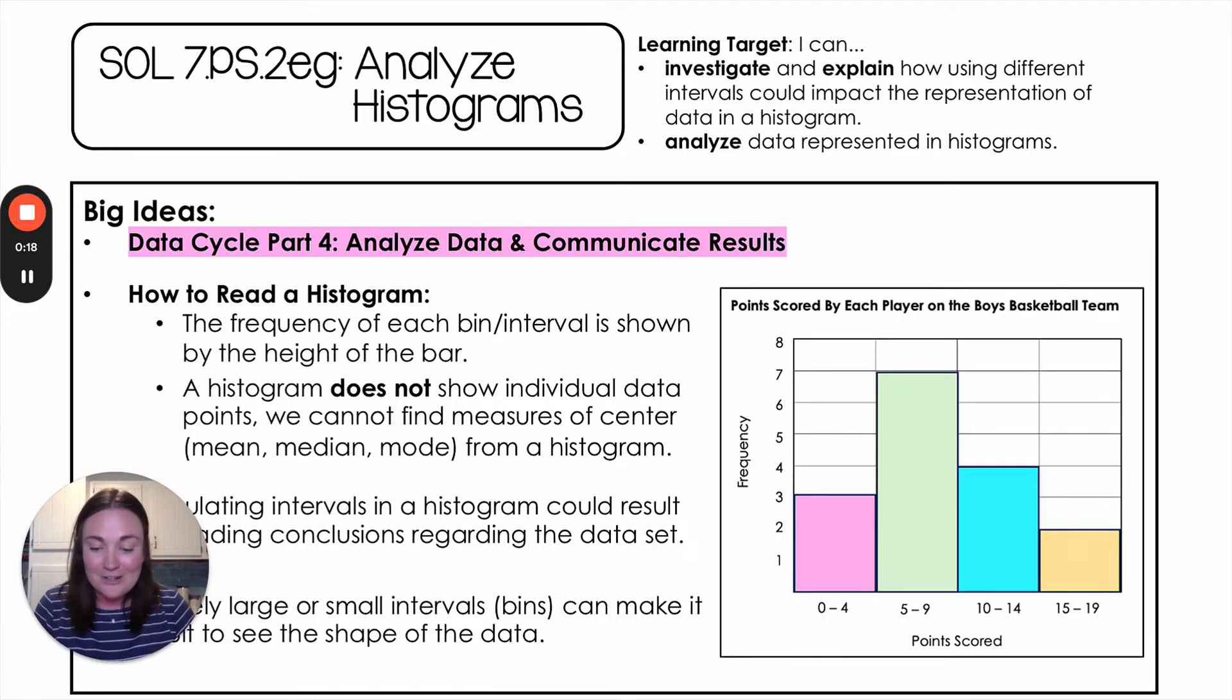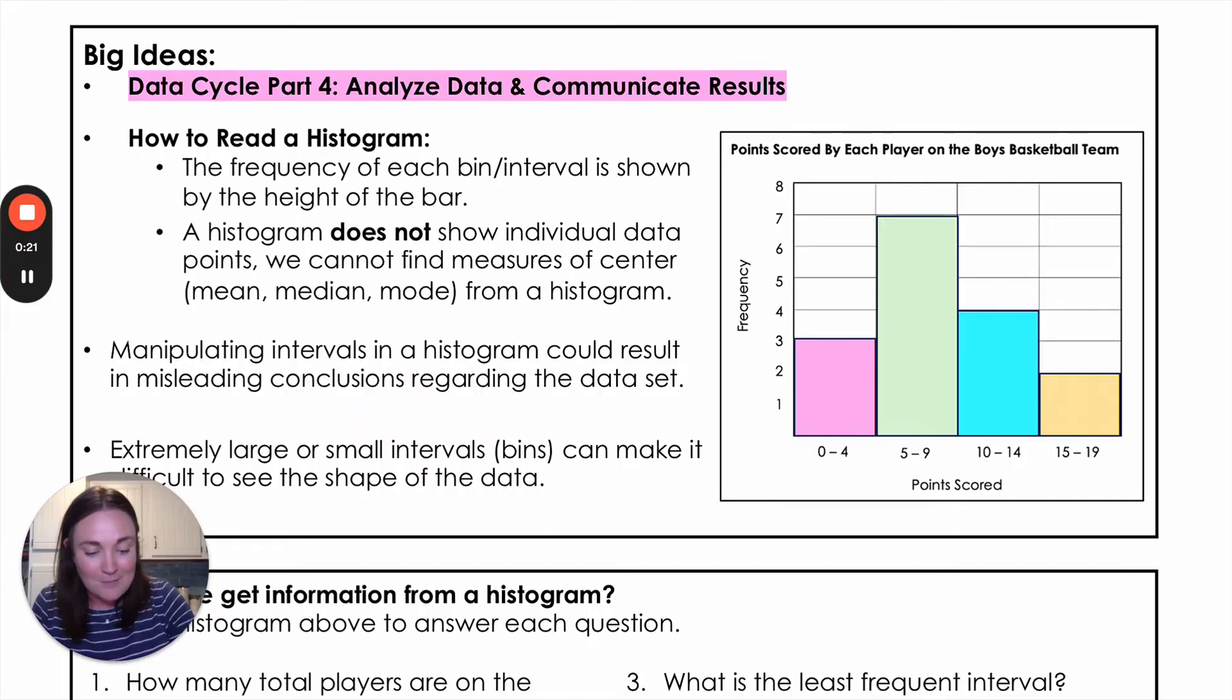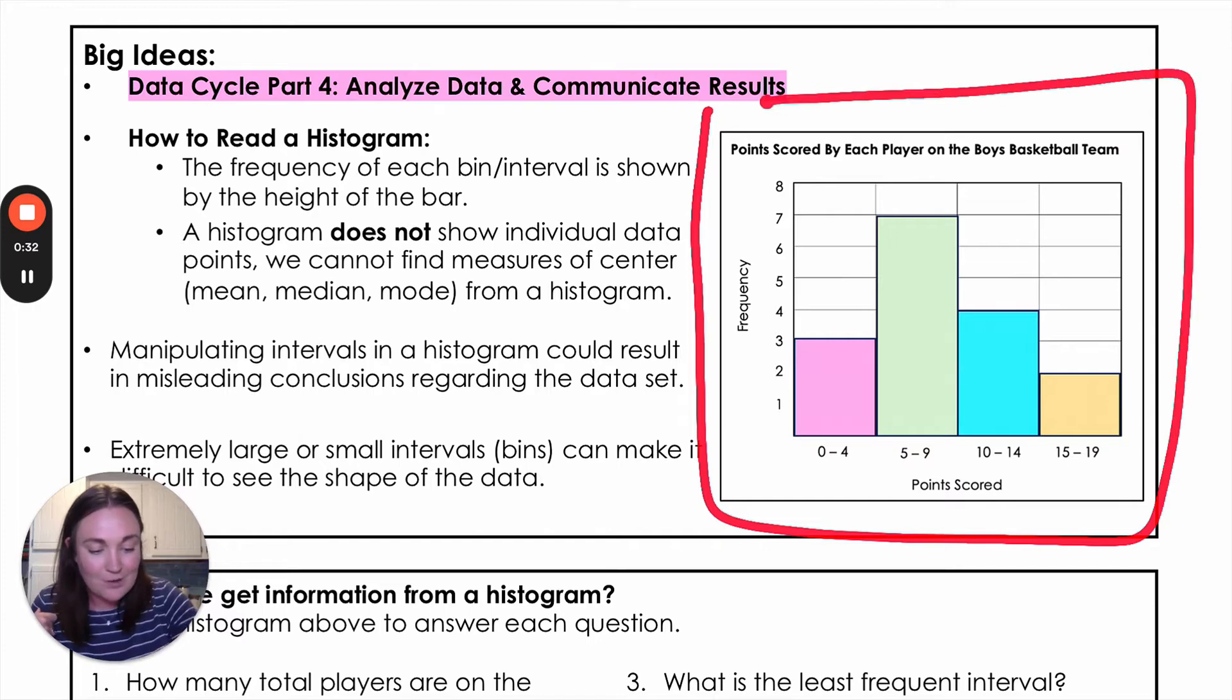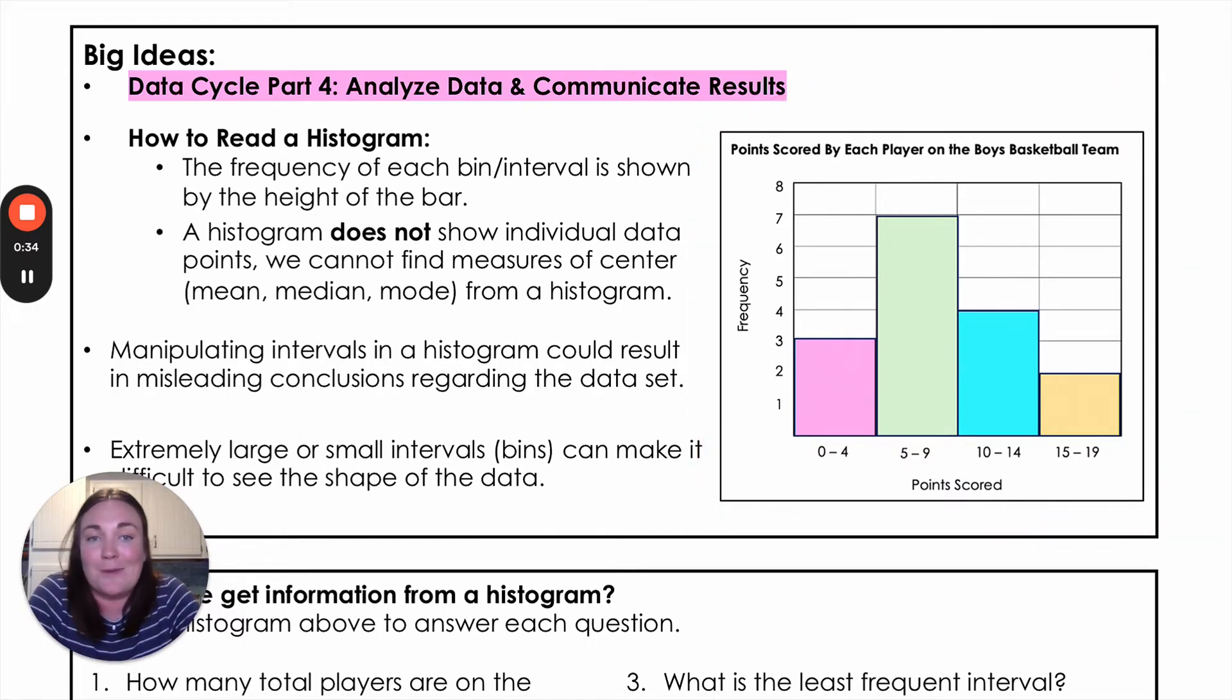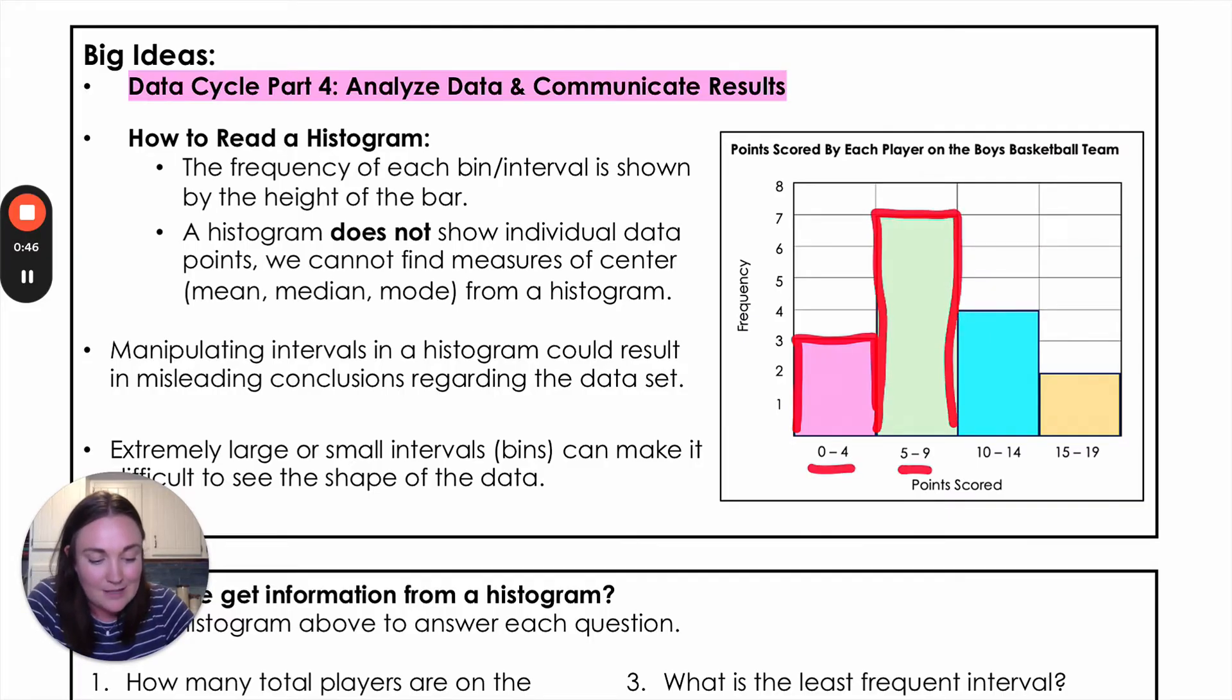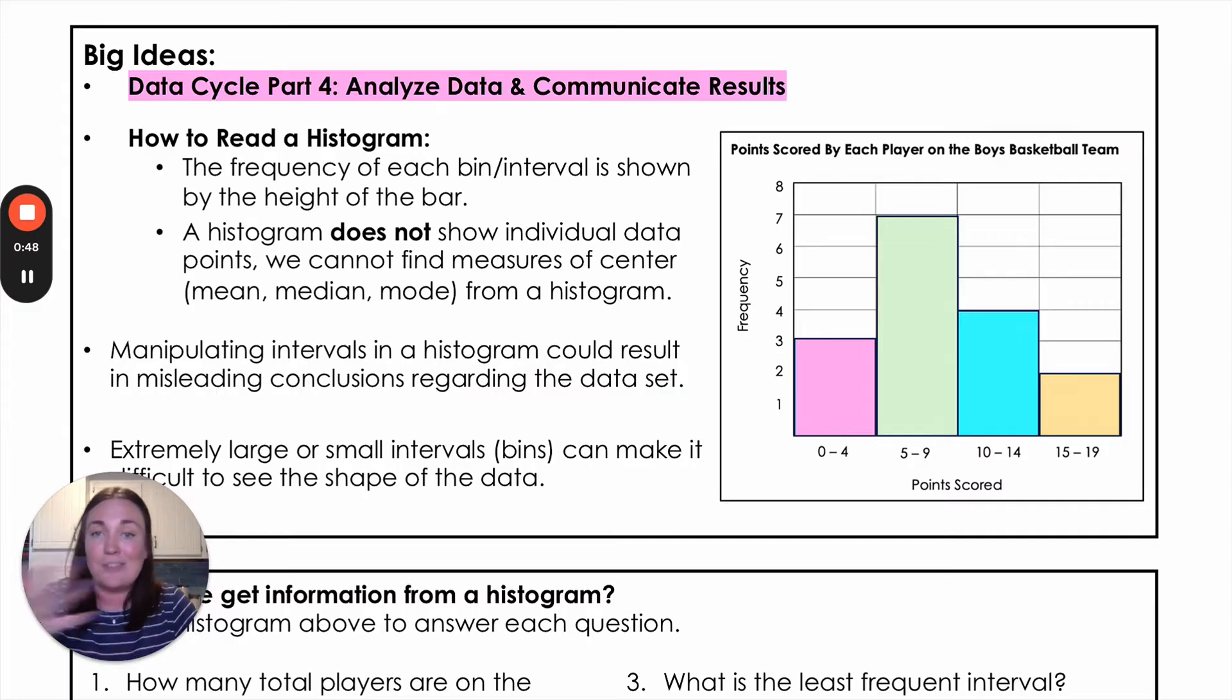So just a few reminders about histograms. Remember that we have our intervals across the bottom and that the height of that bar is telling us the frequency or how many points are in that interval. So for example here, I've got this histogram is talking about points scored by each player on the boys basketball team. The bottom is the number of points scored and the frequency is over here. So this means that there were three players that scored zero to four points. There were seven players that scored five to nine points, so on and so forth. So that's how we're going to read those histograms.